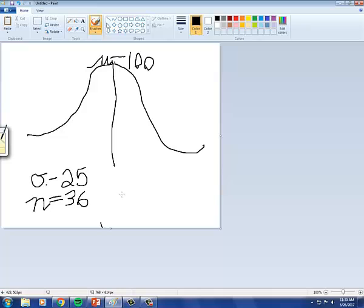So that will be sigma, and we'll put a little subscript here of x-bar to remind us that this is the sampling standard deviation. And that will be equal to our population standard deviation of 25 divided by the square root of our sample size. So in this case that will be 6.